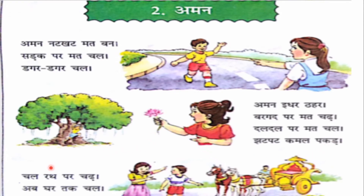Now children, the last two lines: Chal rat par chad. Ab ghar ta ka ta chal. Chal rat par chad. Ab ghar ta ka ta chal. Let's read again: Chal rat par chad. Ab ghar ta chal.